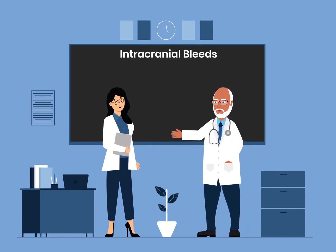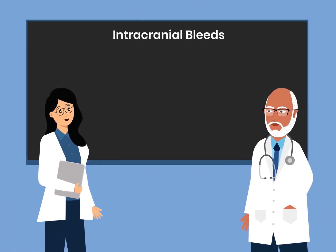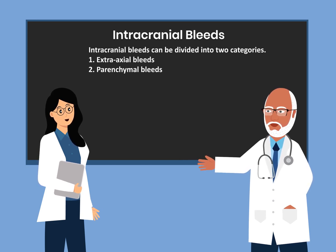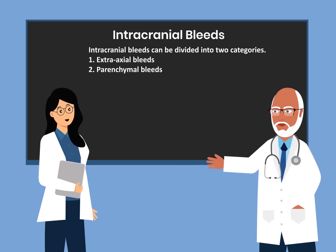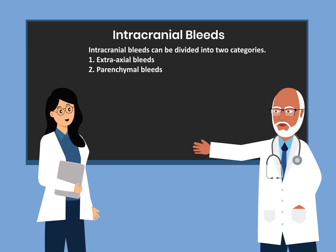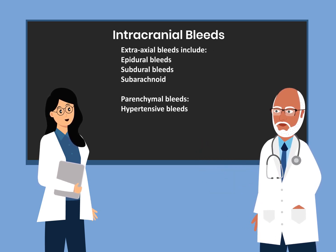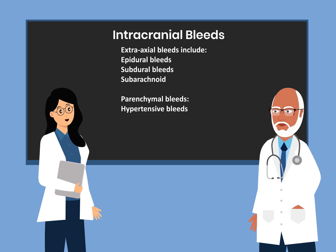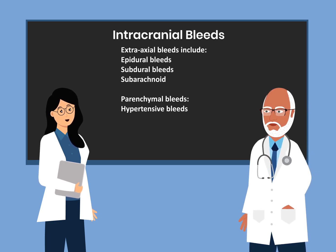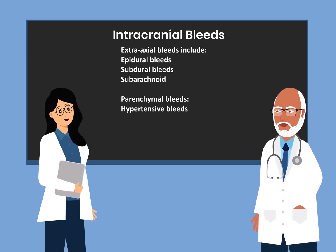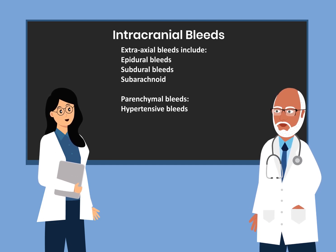Today I want to talk about intracranial bleeds. Intracranial bleeds can be divided into two categories. The first category is extra-axial bleeds and the second category is parenchymal bleeds. Extra-axial bleeds can further be divided into epidural bleeds, subdural bleeds, and subarachnoid bleeds. Parenchymal bleeds include hypertensive bleeds that occur in the brain parenchyma.